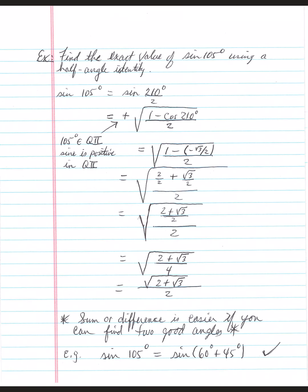Find the exact value of sine(105°) using a half-angle identity. Locate the half-angle section on your identity sheet. 105 is half of 210, so rewrite the angle as 210/2 — still equals 105, but we need that numerator 210.